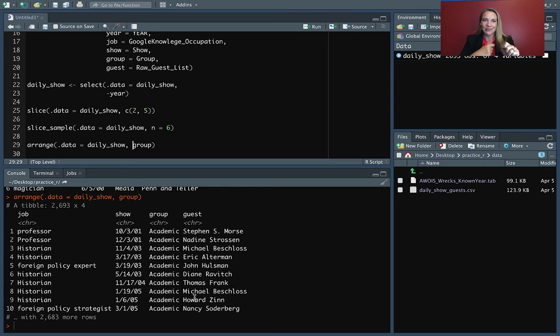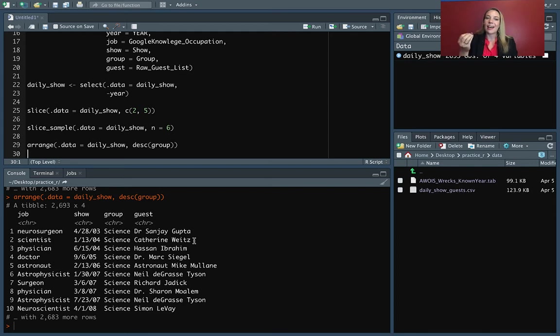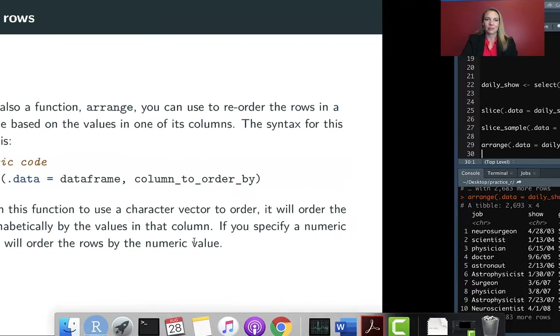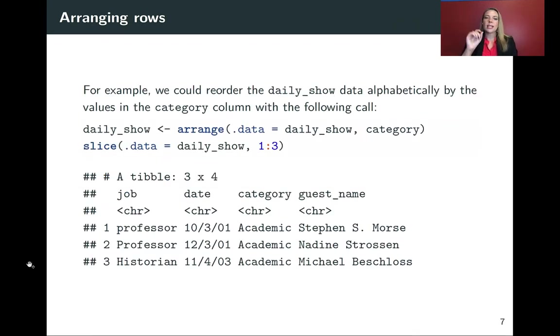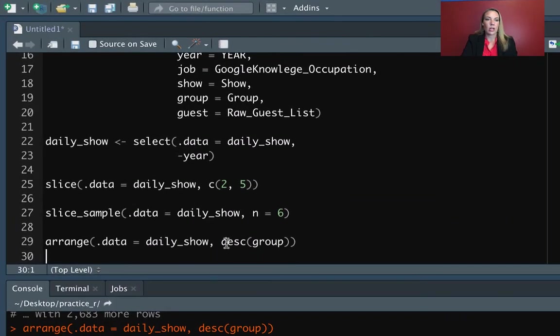Now you might want this order flipped. You might want to start with Z instead. And so what you can do for that is you can do DESC. That stands for descending. So if we run that, now we'll see that it's with groups for science. So it's ones near the end of the alphabet. This can be really helpful because sometimes you want to get a subset that's just the first few values for something. So we can run this and then follow it with slice to pull out just those top values. I've shown an example here where it's first using arrange to rearrange the rows in terms of the category column. It's going to do it alphabetically since that's a character. And then next we'll use slice to pull out just the first three of those.